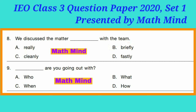Question 9: 'Dash are you going out with?' Option A is correct: 'Who are you going out with?' — meaning 'Kiske saath ja rahe ho?'